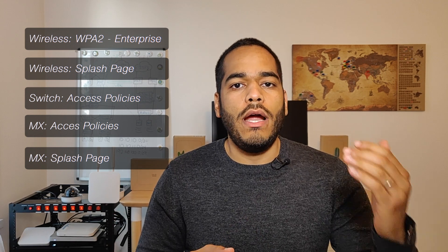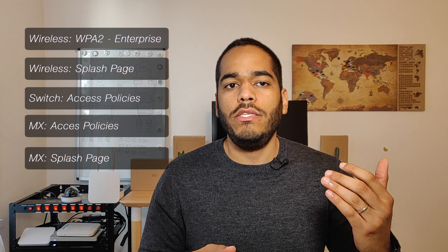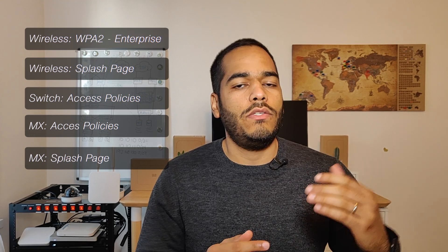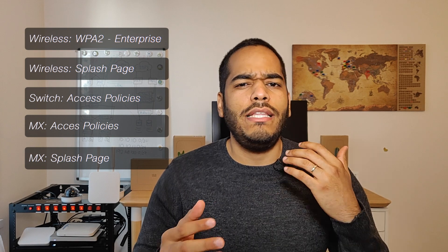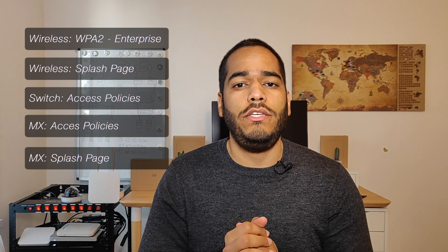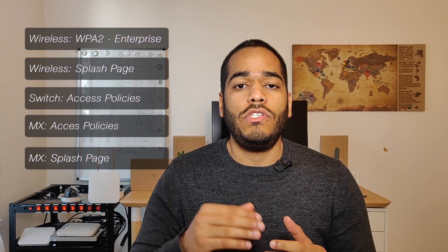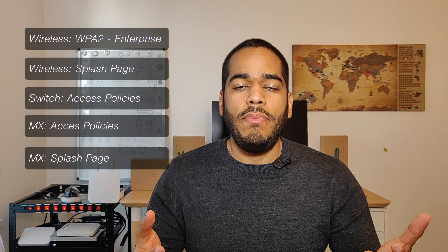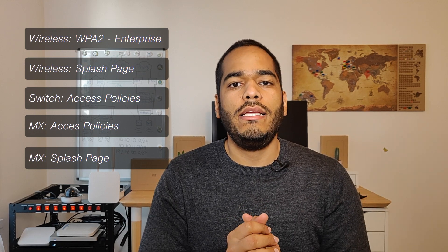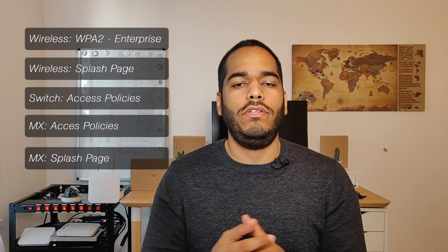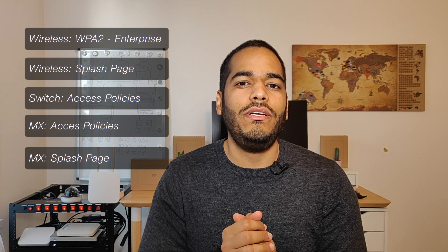Here you can see all the aspects that we're going to cover. First, the wireless access control page to use WPA2 Enterprise with a RADIUS server and with a splash page. We're going to see the difference between the two and the considerations during implementation. The same thing for the switches and how you configure a specific switch port for RADIUS authentication, and all the way to the security appliance. Let's go to the dashboard and configure it.